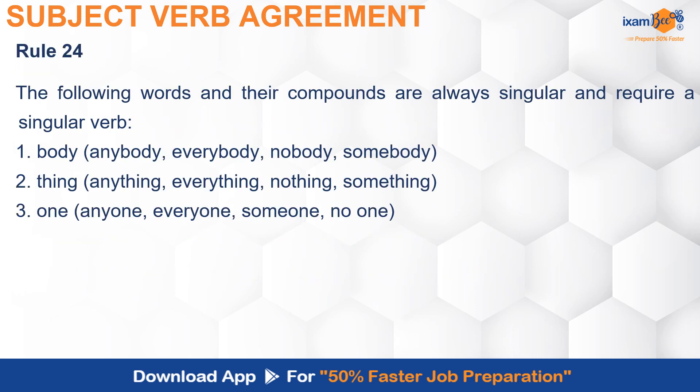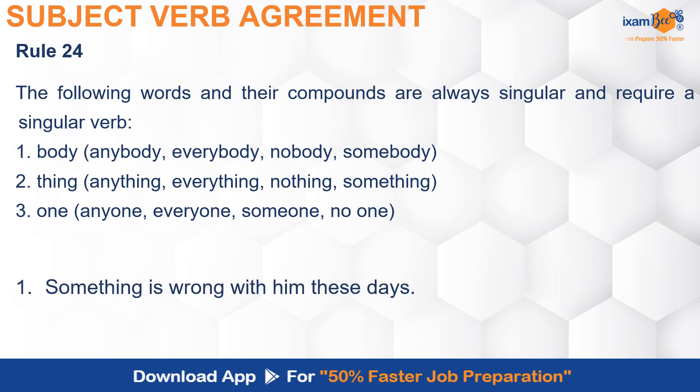The next rule says that words like 'anybody', 'everybody', 'nobody', 'somebody', and similarly 'anything', 'everything', 'nothing', 'something', and also 'anyone', 'everyone', 'no one', 'someone' — all these words are always singular and always take singular verbs. For example: 'Something is wrong with him these days' and 'Everybody in the office has tickets.' So the verb used with these words is always singular.